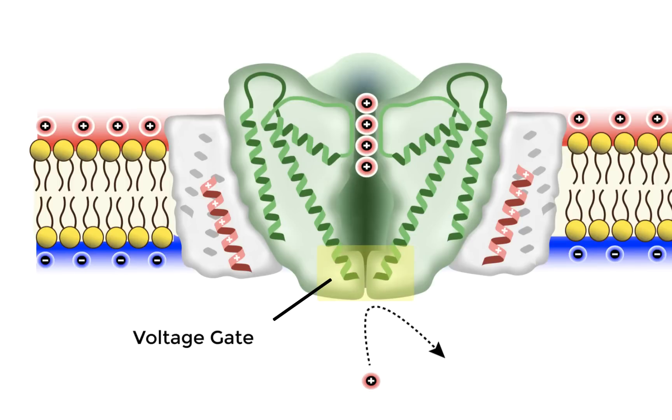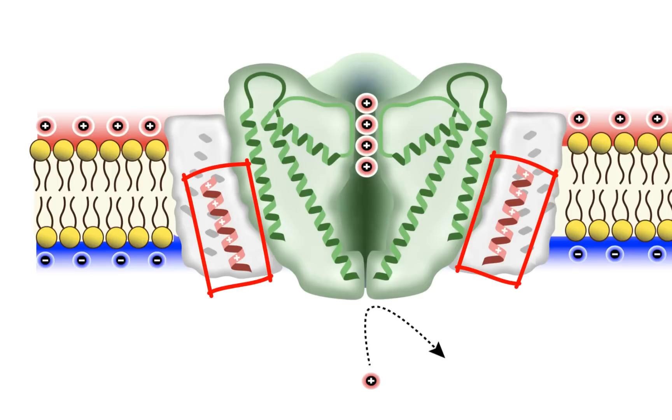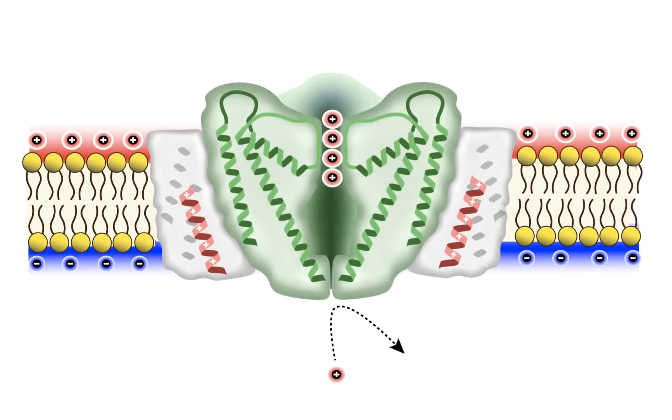And just like in the voltage-gated sodium channels, the opening and the closing of the voltage gate is coupled to the position of the voltage sensor out here in the voltage sensor domain. One important structural and functional difference that these potassium channels have relative to the sodium channels is they lack an inactivation gate.